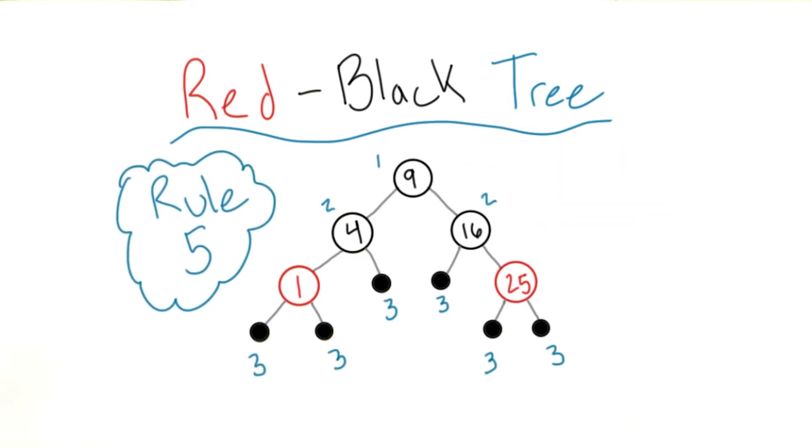Lastly, for the rule that makes these trees actually useful, every path from a node to its descendant null nodes must contain the same number of black nodes. We'll see these rules in action when we talk about inserting. For now, know that these rules, and the last one in particular, ensure that the tree never gets too unbalanced.